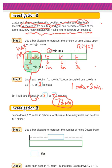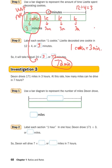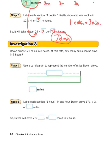We're going to go down to Investigation 3 — you're going to do this one with me, and then we'll try some on the next page. This says: Devin drives 171 miles in three hours. At this rate, how many miles can he drive in seven hours? We're going to take 171 miles in three hours and figure out how many miles Devin can drive in one hour — that is the unit rate. Once we figure that out, we can easily figure out how long it will take him to go seven hours.